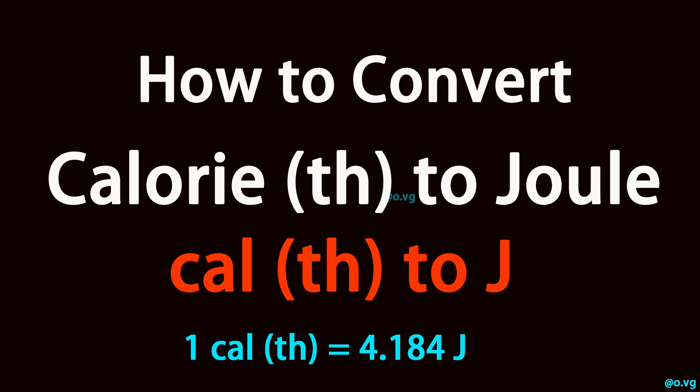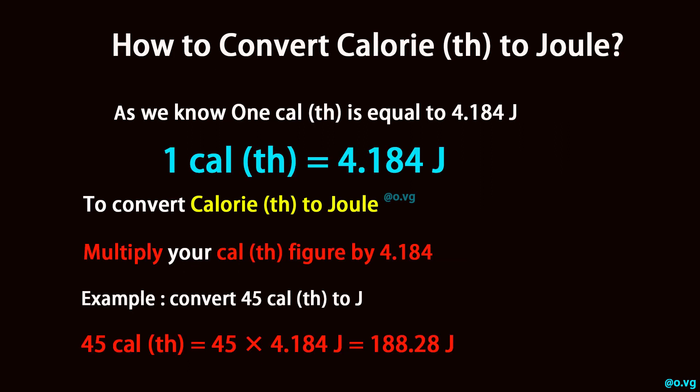How to convert calorie (th) to joule? As we know, 1 calorie (th) is equal to 4.184 joule. 1 calorie (th) equals 4.184 joule.